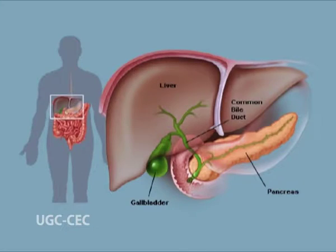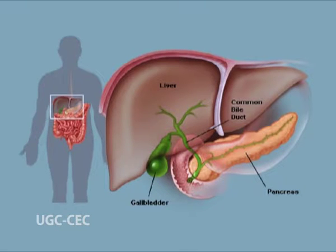Gall bladder. It is a pear-shaped sac attached by bile ducts to the back of the liver and on the right side of the abdomen. The gall bladder has a body and neck which is connected to a small tube called the cystic duct. This duct is connected to the common hepatic duct coming from both the right and left liver, and to the common bile duct connecting the pancreas and the duodenum. Bile is collected in the gall bladder between meals and empties into the bile duct through the cystic duct during meals.